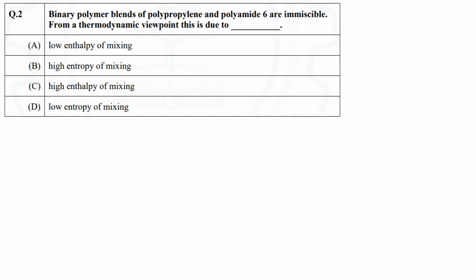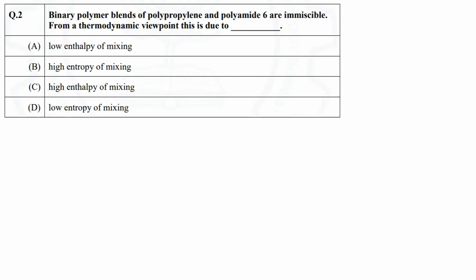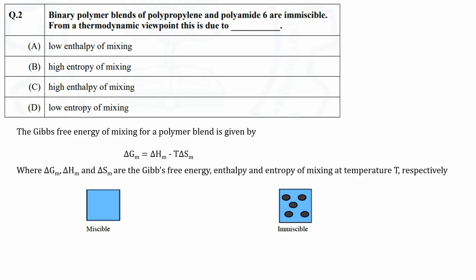Question 2 is from polymer blends. In the question it is given that polypropylene and polyamide 6 together form an immiscible blend and we need to identify the thermodynamic reason for their immiscibility. As you know, a polymer blend is a mixture of two or more polymers. Depending on their physical and chemical nature, they can be miscible or immiscible blends.